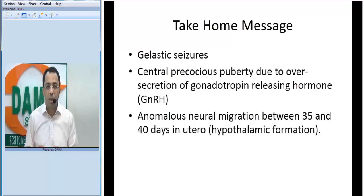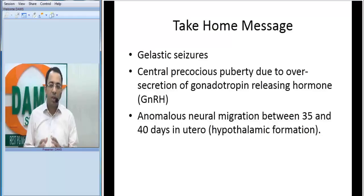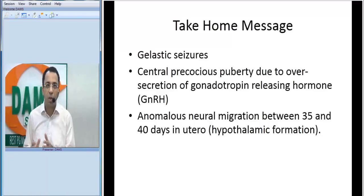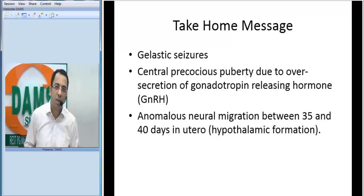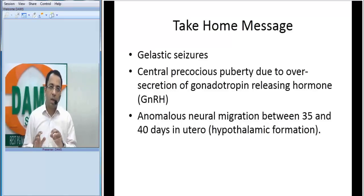Second, this lesion is associated with central precocious puberty, which is probably due to over-secretion of gonadotropin-releasing hormone (GnRH). This is a hematomatous, non-neoplastic lesion, believed to be caused by anomalous neural migration between 35 to 40 days in utero, which is the time when the hypothalamus is being formed. So this is a case of tuber cinereum hamartoma.